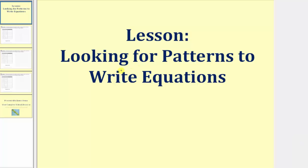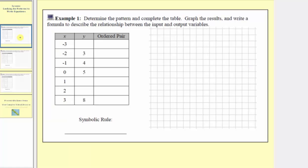Welcome to part one of the lesson on looking for patterns to write equations. In example one, we're asked to determine the pattern and complete the table. We want to graph the results and then write a formula or equation to describe the relationship between the input and output variables. The input variable is x, and the output variable is y, so we want to begin by determining what the outputs would be by looking for a pattern.